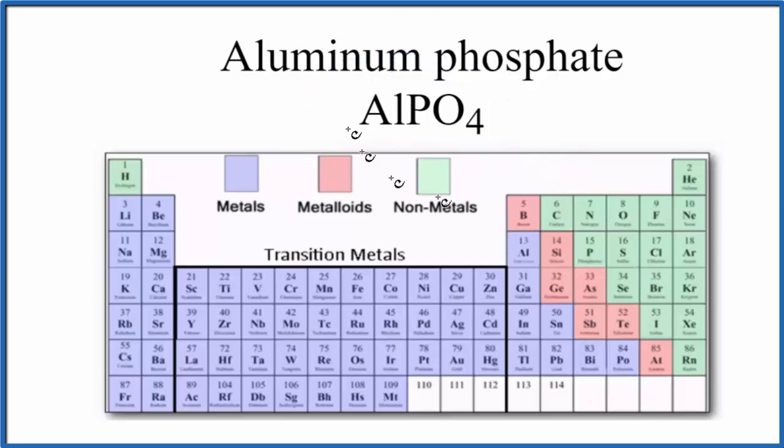That's because when we look at the periodic table, aluminum right here, that's a metal, and then phosphorus and oxygen, those are both non-metals. So we have a metal and then non-metals. That gives us an ionic compound.